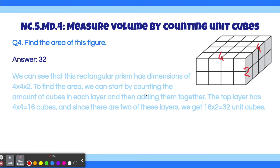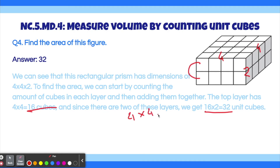To find the area, we can start by counting the amount of cubes in each layer and then adding them together. The top layer has 16 cubes. Since there are two of these layers, we get 16 times 2 equals 32 cubes. Another way to solve this is to multiply all the numbers together. The volume of a rectangular prism is solved by multiplying the length times the width times the height. So length times width equals 16, and then that times the height equals 32, which is also our answer.